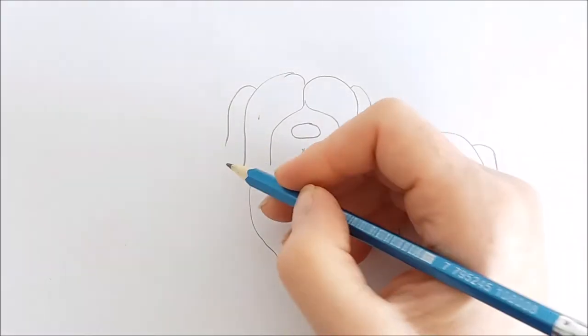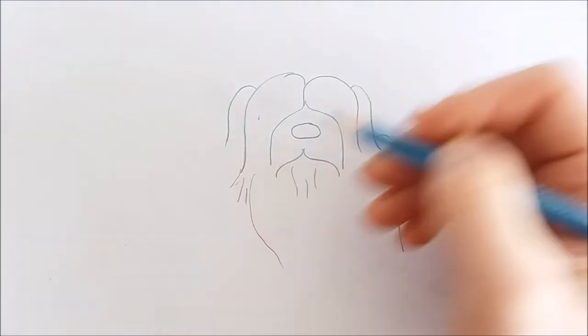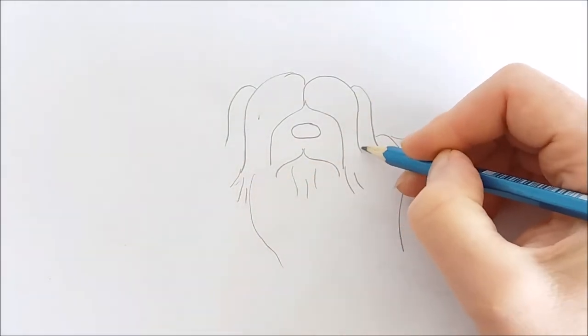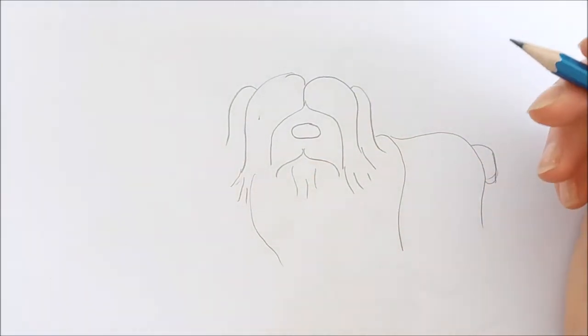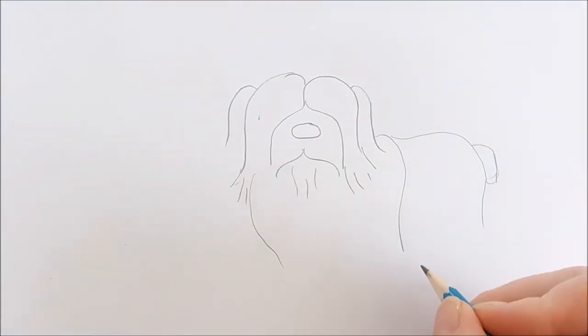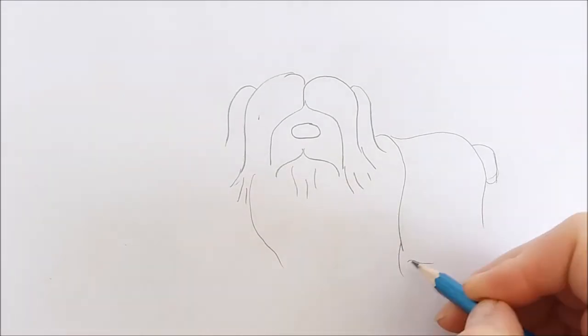On the left side of the chin I'm drawing a few more curving lines. This is his long hair. And then just some random lines down towards the bottom of the dog's belly.